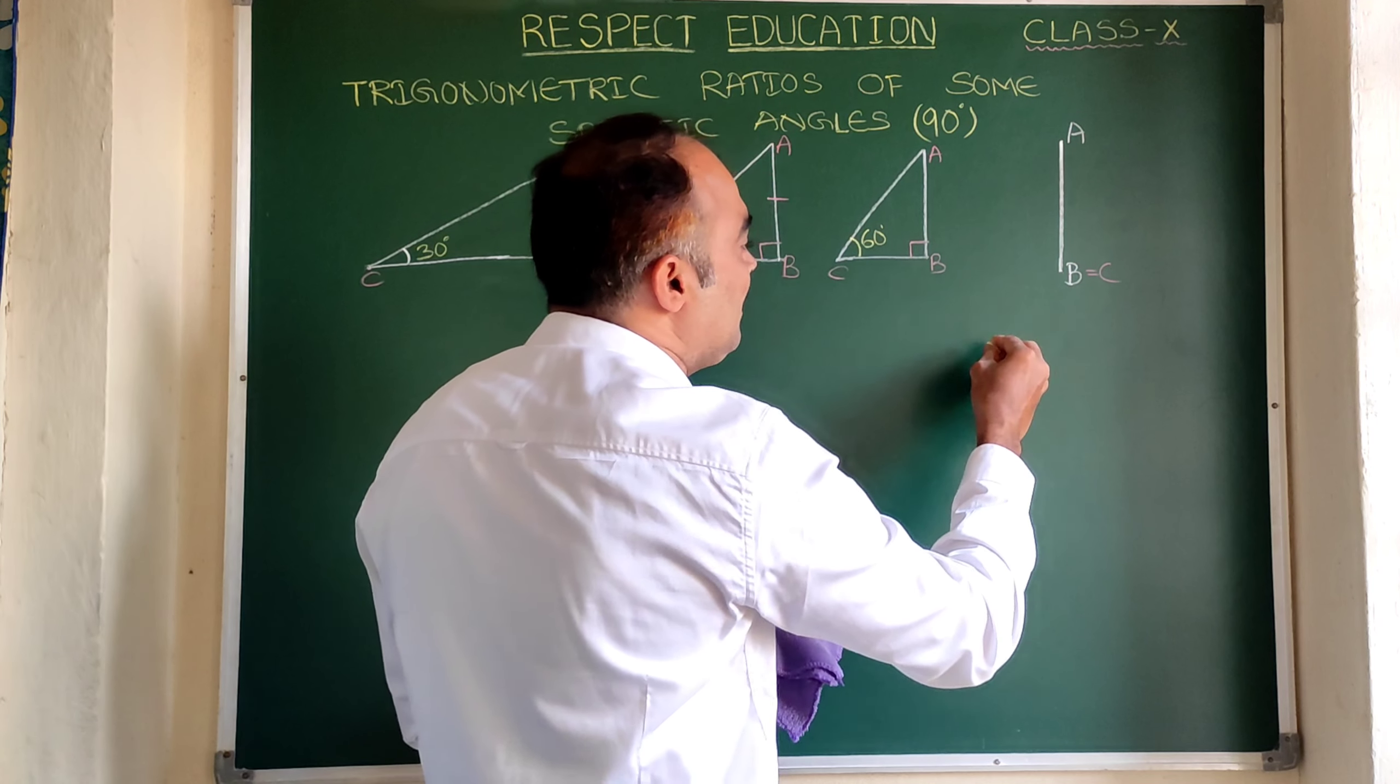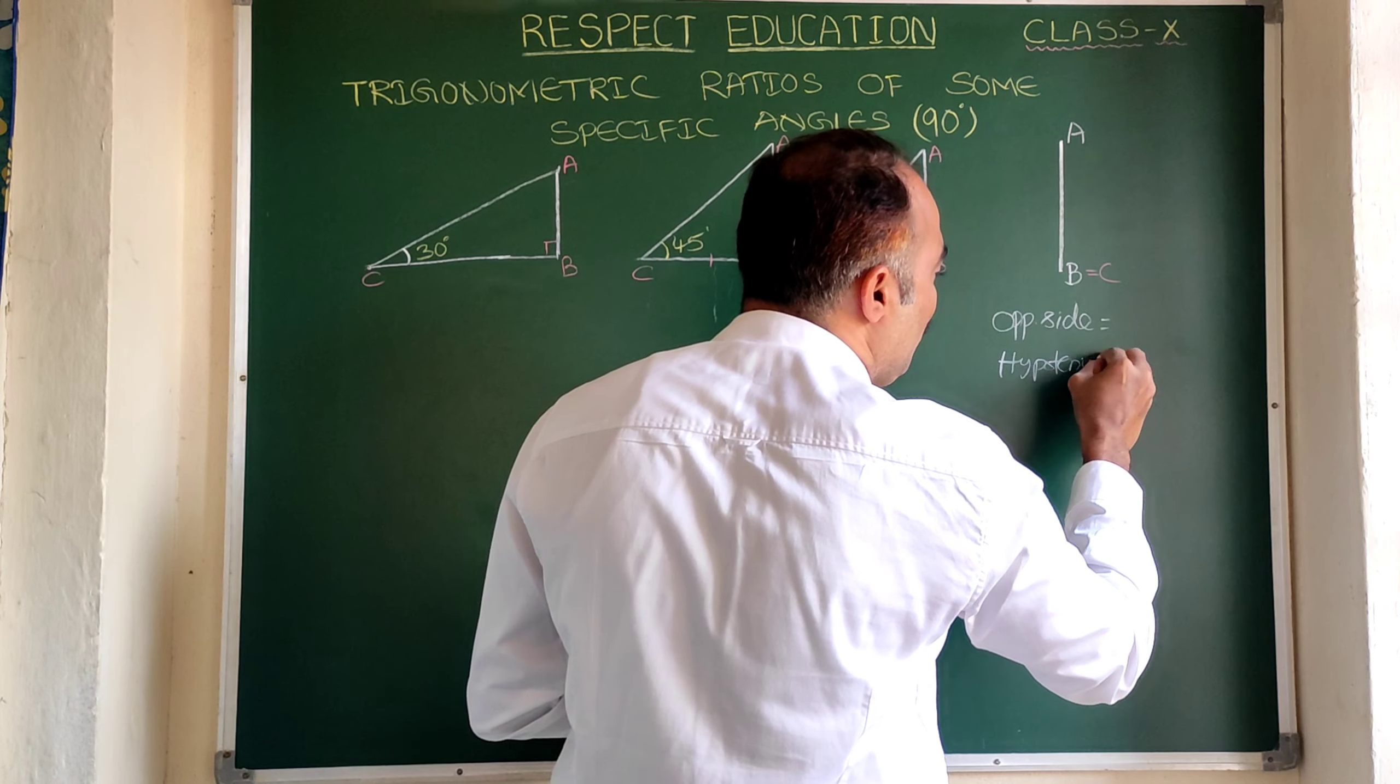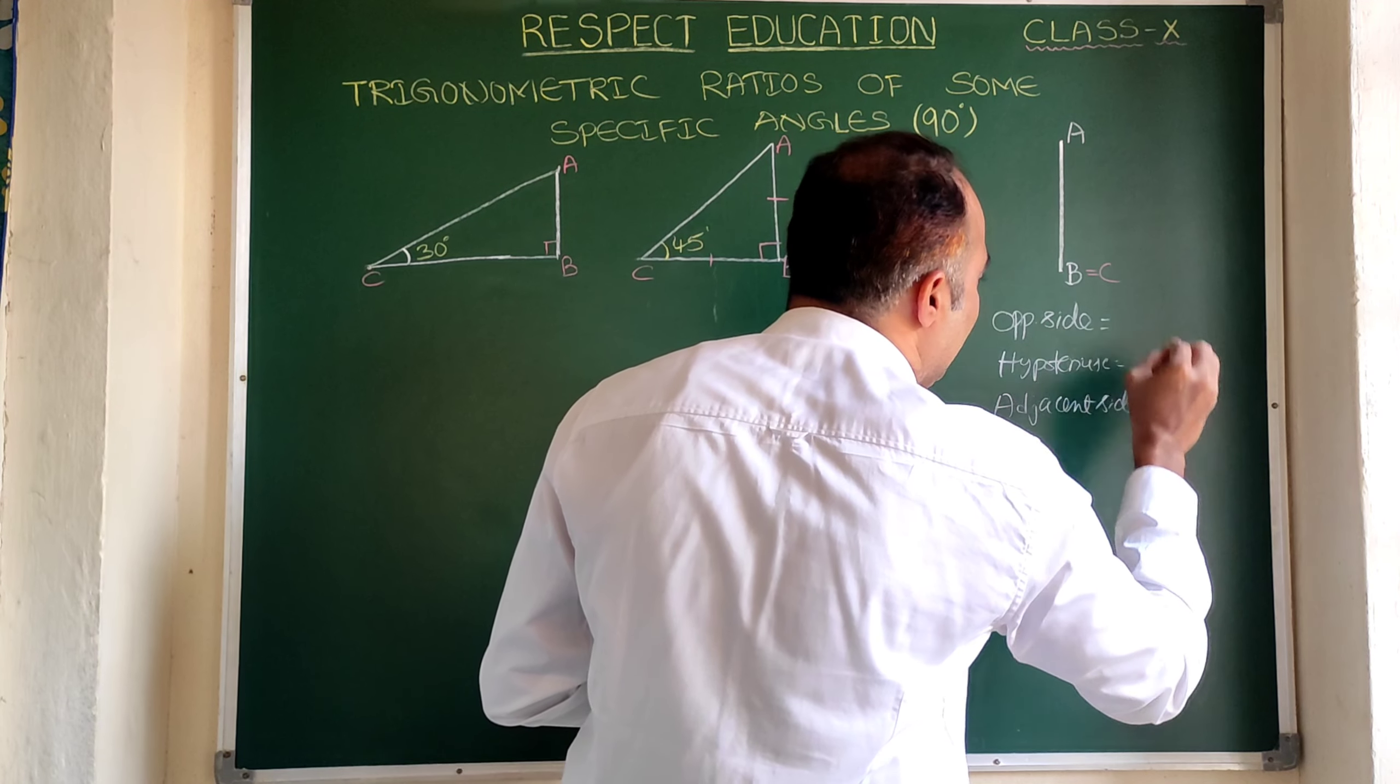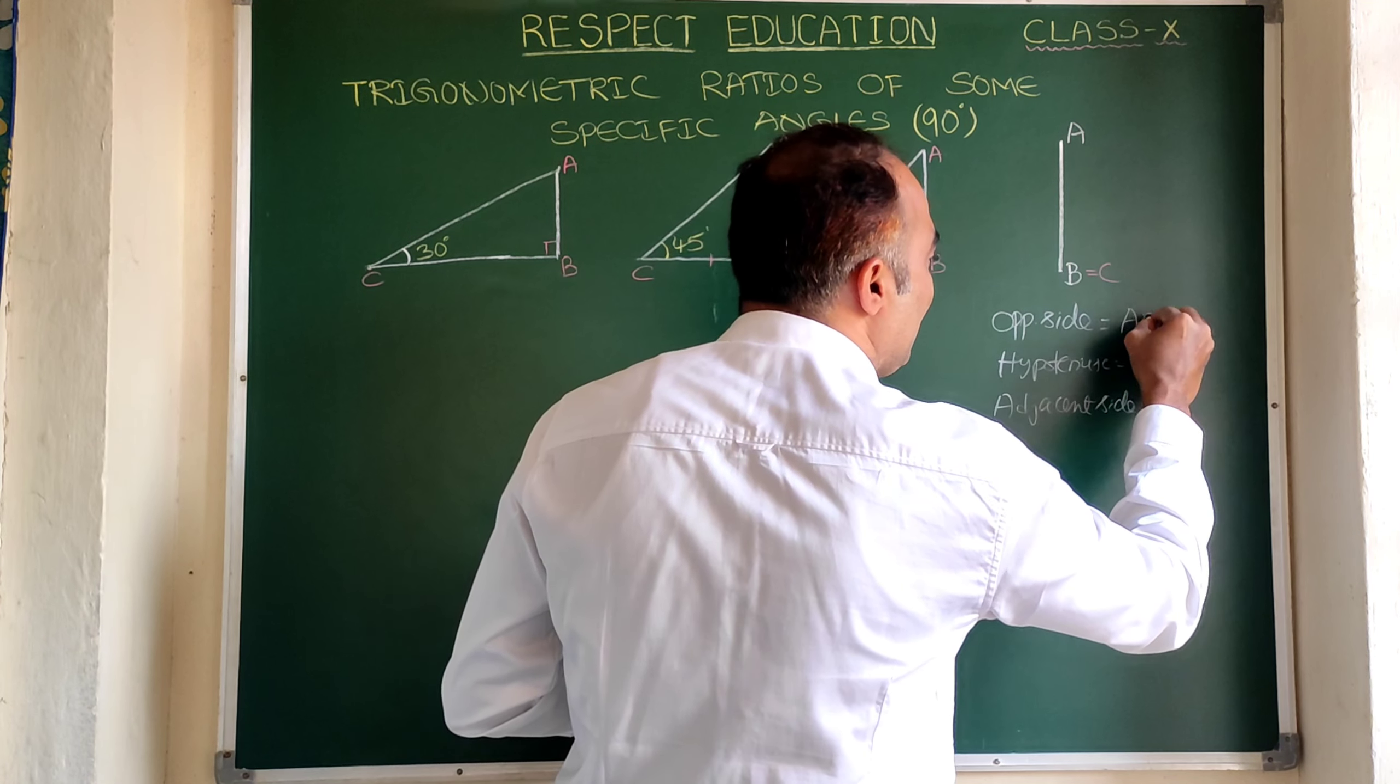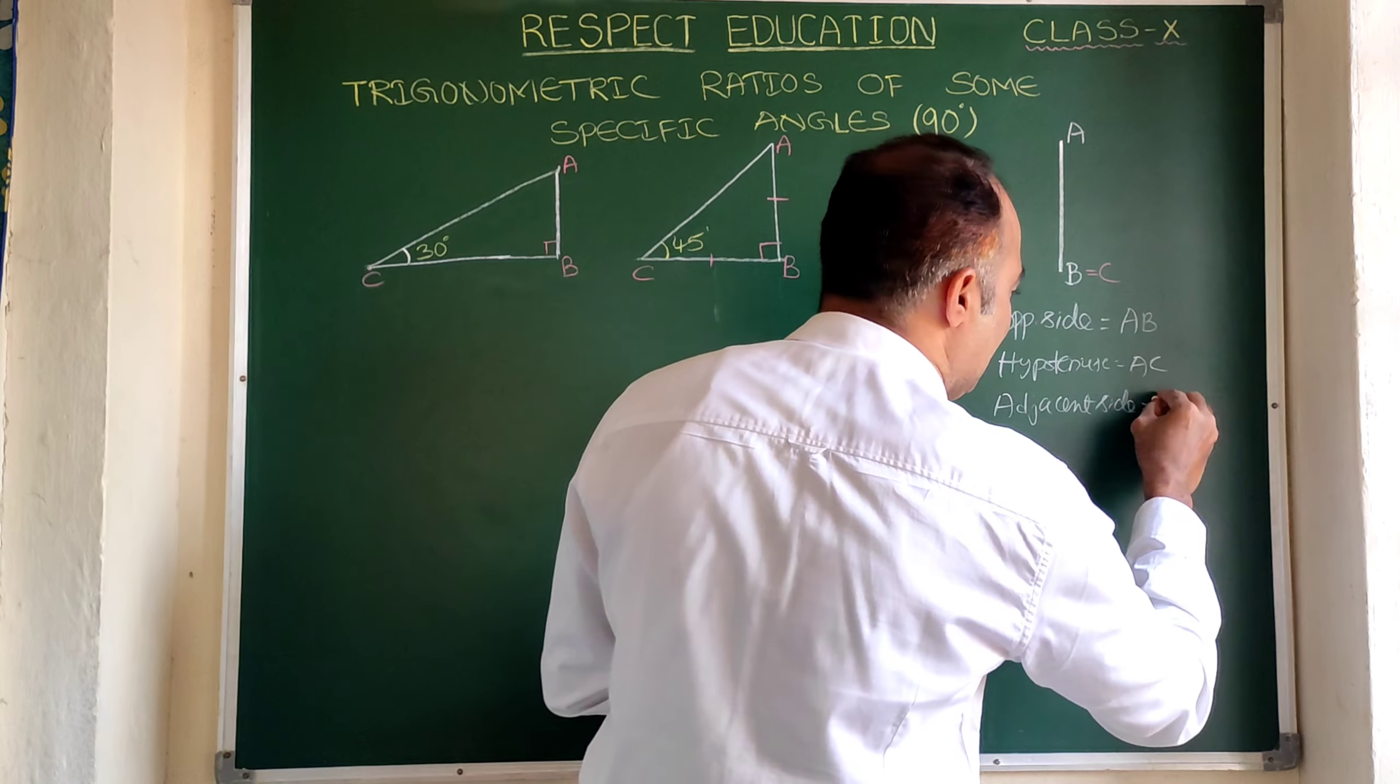In this triangle, let us see what is the value of opposite side, hypotenuse, and also adjacent side. So same 90 degrees if we happen to draw here, opposite side will be AB, and hypotenuse will be AC, and adjacent side will be BC. Adjacent side is BC.